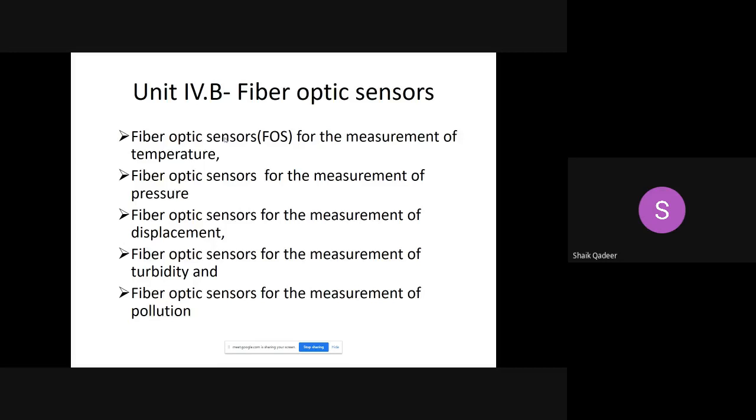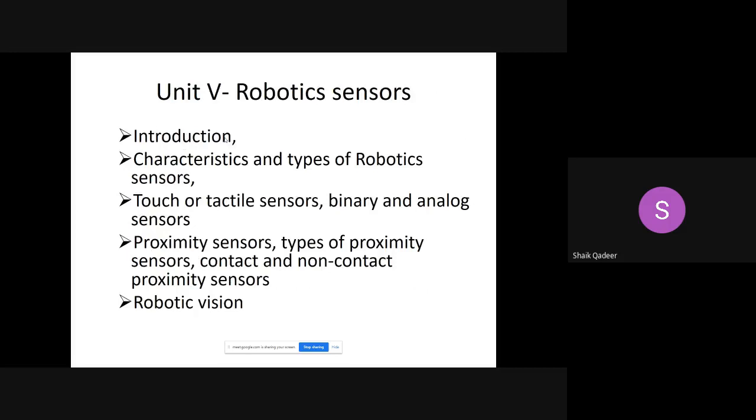After covering the introduction of fiber optic sensor, we start covering a few applications. First application is temperature measurement with FOS, second is pressure measurement, third is displacement measurement, fourth is turbidity measurement, and last one is pollution measurement with FOS. Hope you are noting the things.